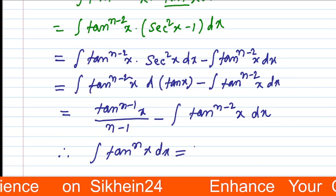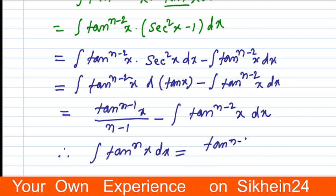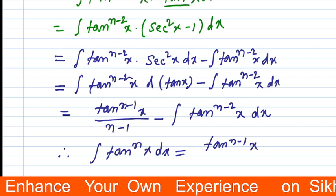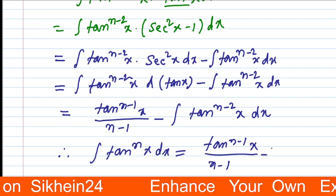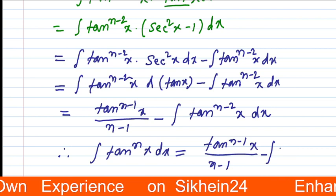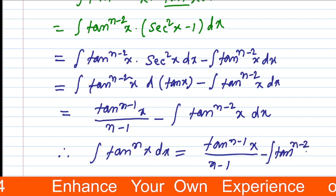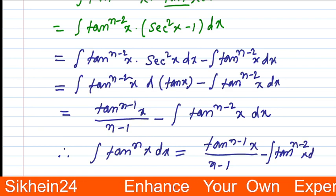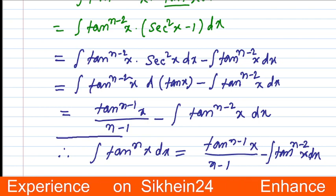So we have integral of tan to the power n x dx equal to tan to the power n minus 1 x by n minus 1 minus integration tan to the power n minus 2 x dx.